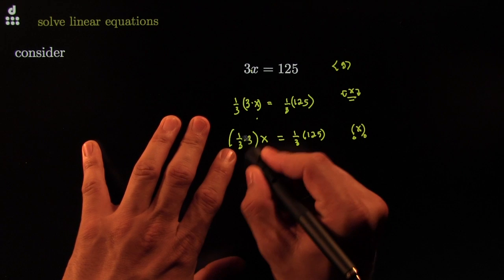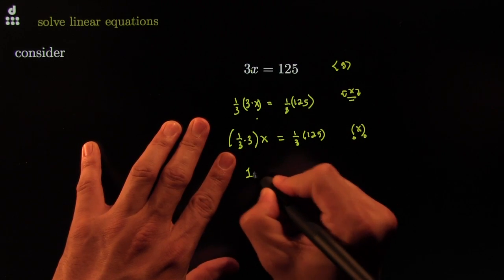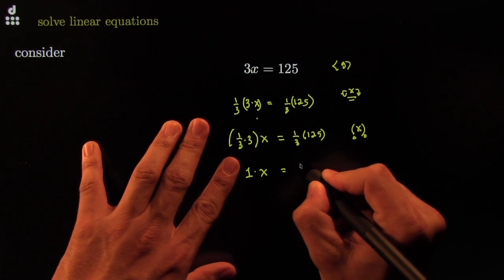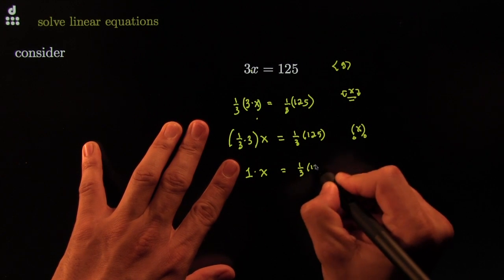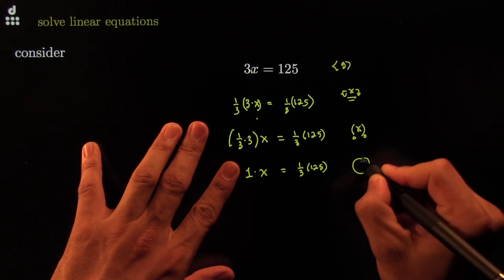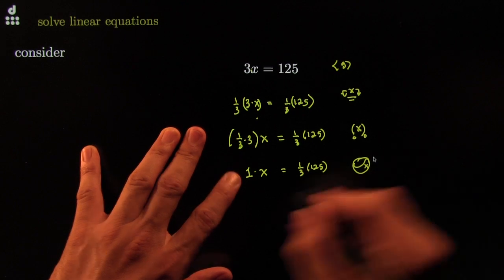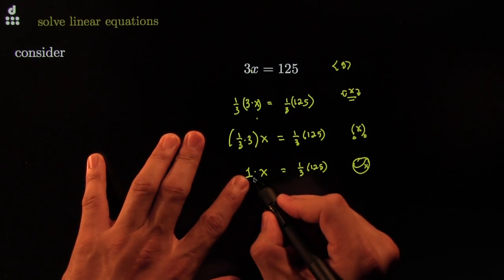Next, these are born to kill each other. So they give you just the multiplicative identity. This would be 1 over 3 times 125. These are multiplicative inverses of each other. 3 times the 1 third. And that goes away.